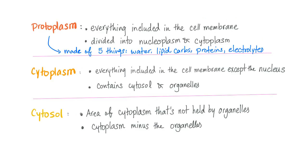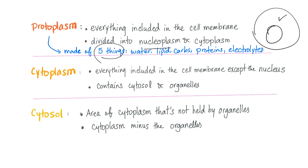As you know, protoplasm is everything included inside of the cell membrane, divided into nucleoplasm and cytoplasm. It is made of five things: water and electrolytes, lipids, carbohydrates, and proteins.